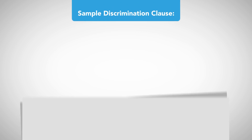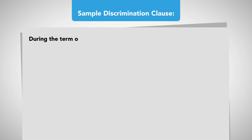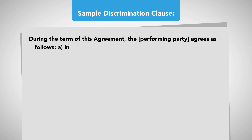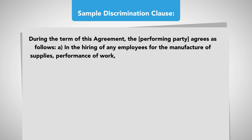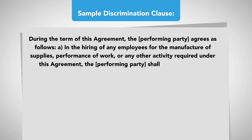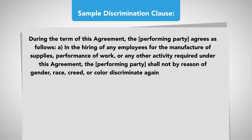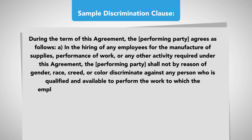Sample Discrimination Clause. During the term of this agreement, the performing party agrees as follows. A: In the hiring of any employees for the manufacture of supplies, performance of work, or any other activity required under this agreement, the performing party shall not, by reason of gender, race, creed, or color, discriminate against any person who is qualified and available to perform the work to which the employment relates.